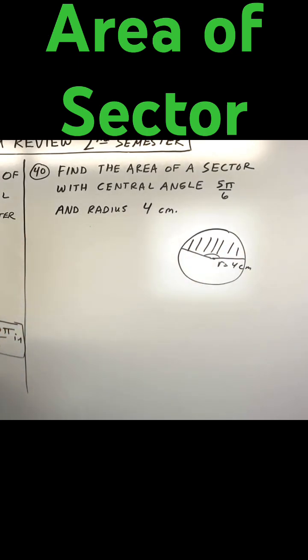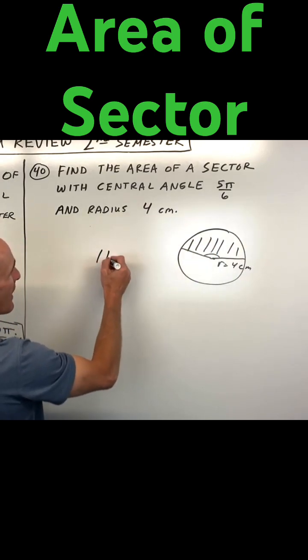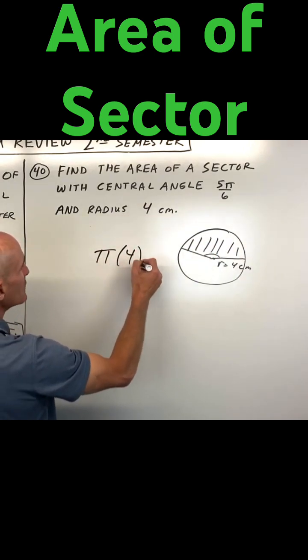Okay, so what we can do is we can think about the area of the whole circle, which is pi r squared. So that's pi times 4 squared.